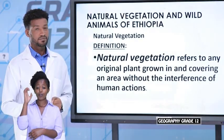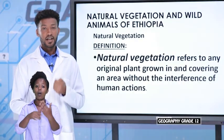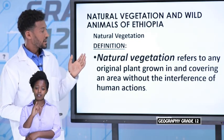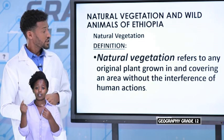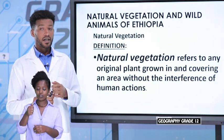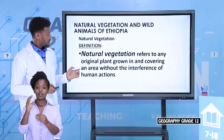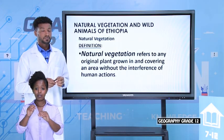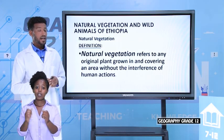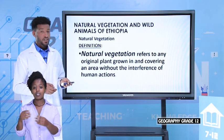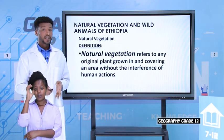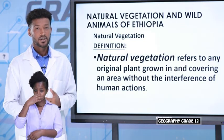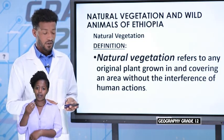Let's start with natural vegetation and wild animals of Ethiopia. Natural vegetation refers to any original plant grown in a country covering an area without the interference of human action. The natural vegetation of Ethiopia is affected mainly by temperature, altitude, and rainfall.